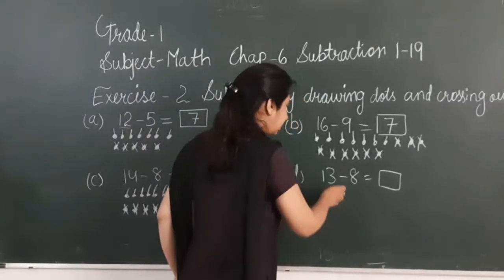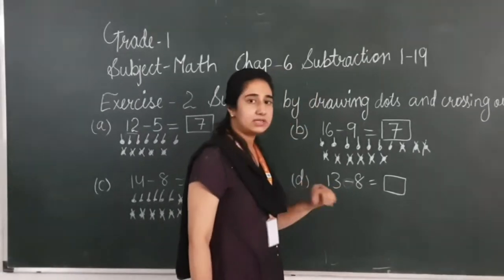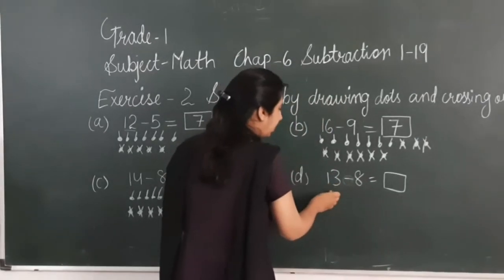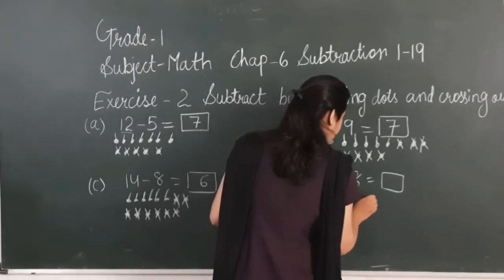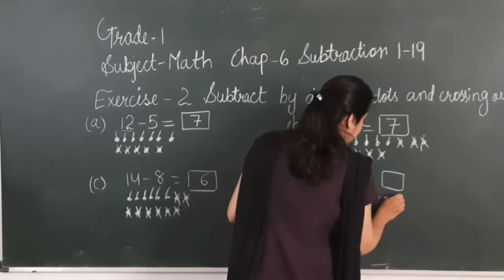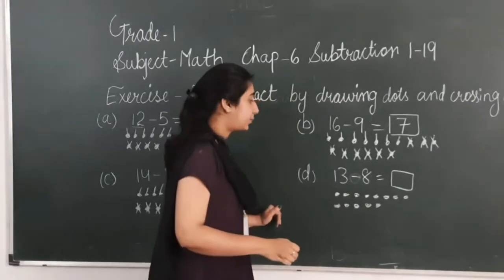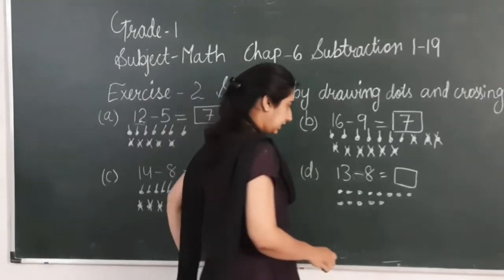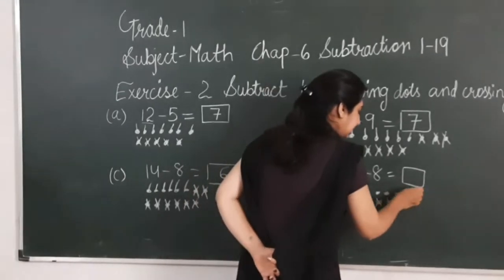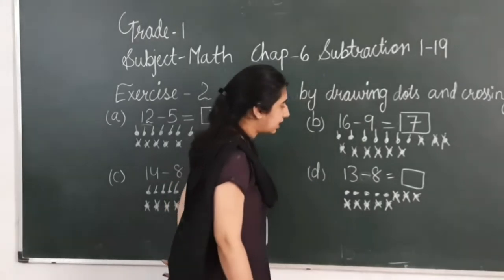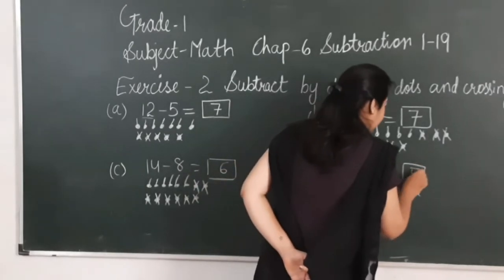13 minus 8. This is the sign of minus. When we subtract any 2 numbers, we put this sign. Here I will draw 13 dots: 1, 2, 3, 4, 5, 6, 7, 8, 9, 10, 11, 12 and 13. Now I have to subtract 8 from 13. I will cross out 8 dots: 1, 2, 3, 4, 5, 6, 7, 8. So after subtracting 8 from 13, how many are left? 1, 2, 3, 4, 5. Five are left with me.